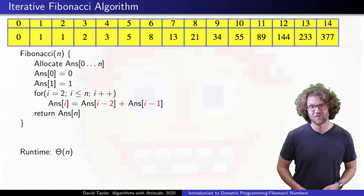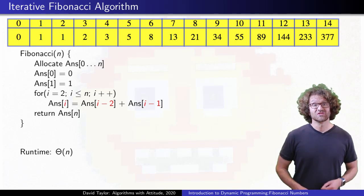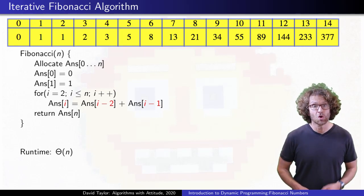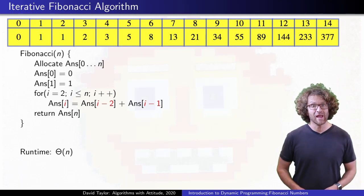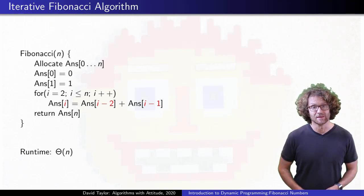When we filled in the ninth value here, we used the seventh and eighth values, but after that we never looked at the seventh value again, or any value below the seventh value. We went from one extreme of not remembering anything, to the other of remembering everything forever. It's ok to forget stuff you won't need anymore.